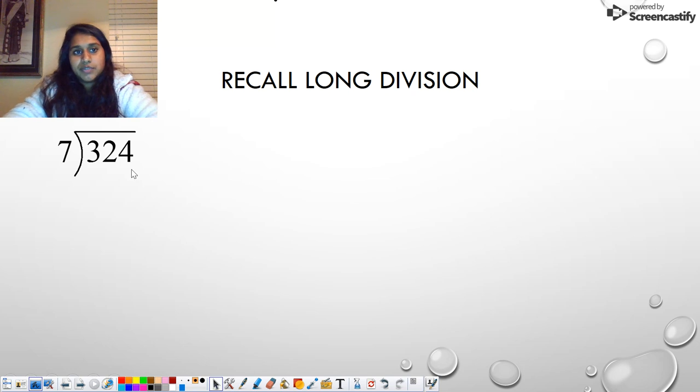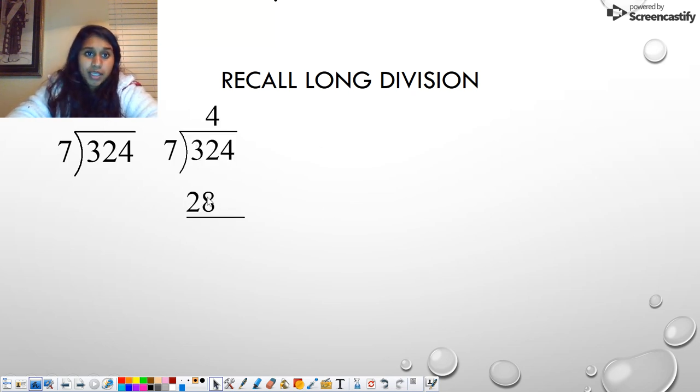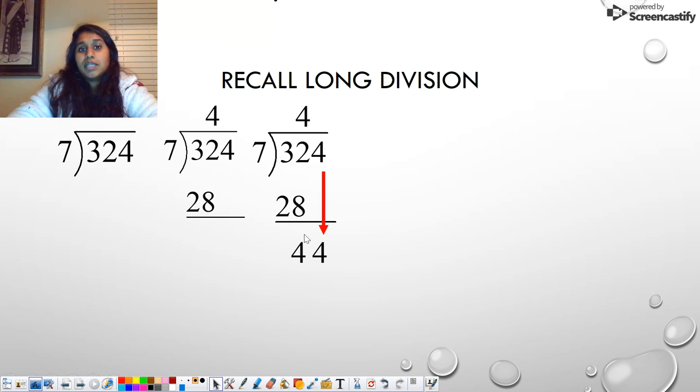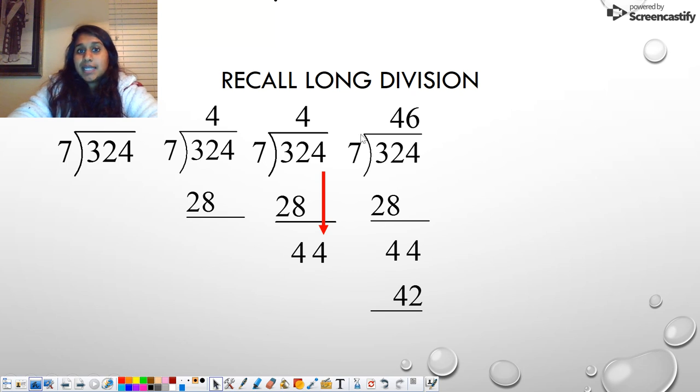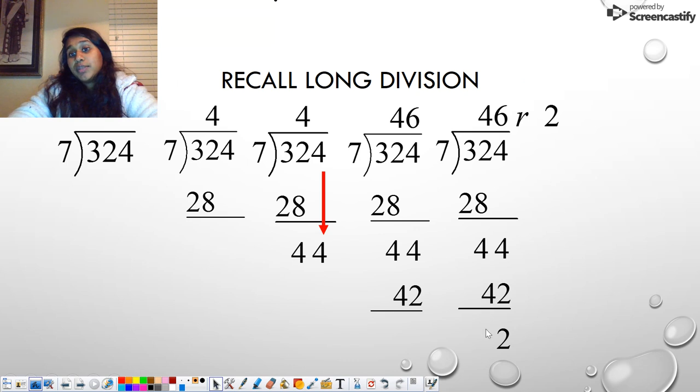So to recall how we do long division, I put an example up here. We know that 7 can't fit into 3, so we move over. 7 can fit into 32, 4 times actually. So 7 times 4 gets me 28. We subtract 32 minus 28, and we end up with a 4. I'm going to bring that 4 right on down, so we end up with 44. How many times does 7 go into 44? Approximately 6 times, because 7 times 6 is 42. So we subtract 44 minus 42, and we end up with a remainder of 2. So 7 goes into 324 46 times with remainder of 2.